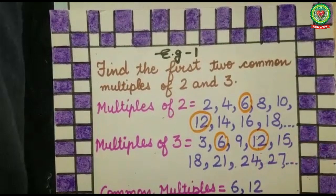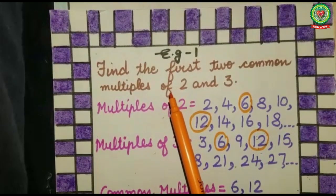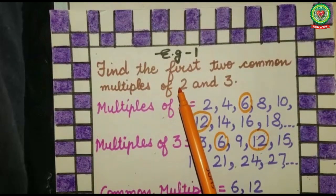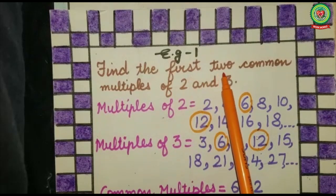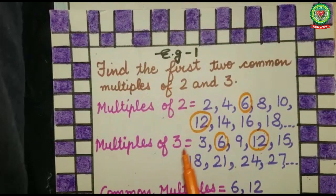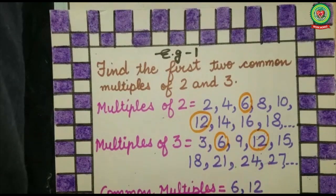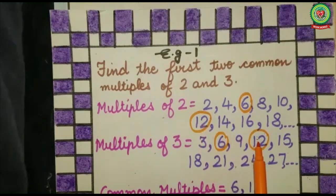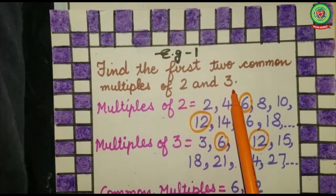In the question I was asked to find the first two common multiples. I got two common multiples: one is six and the other is twelve. So the common multiples are six and twelve — the circled numbers. Six and twelve are the common multiples of two and three.